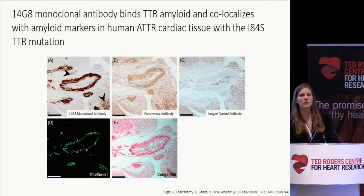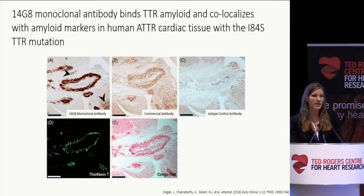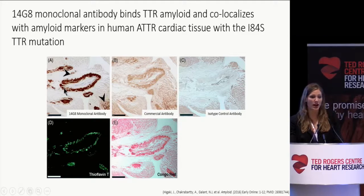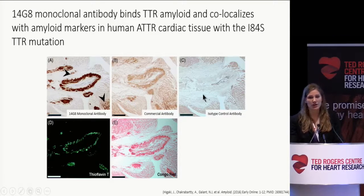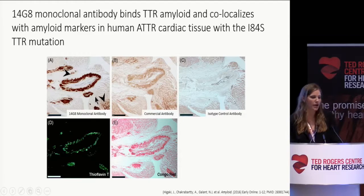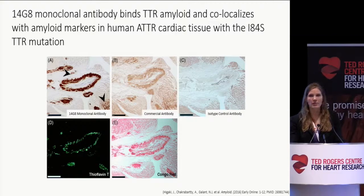We then wanted to validate whether these monoclonal antibodies could recognize TTR amyloid in vivo. We obtained cardiac tissue from a patient who had hereditary ATTR, more specifically the I84S mutation, and exposed our monoclonal antibody to tissue sections from that patient's cardiac tissue. We saw that the monoclonal antibody was able to specifically label TTR amyloid, in comparison to a commercialized control which labeled all forms of transthyretin, and our isotype control which had no labeling whatsoever. We compared this labeling with thioflavin T and Congo red, two controls that generically mark amyloid.